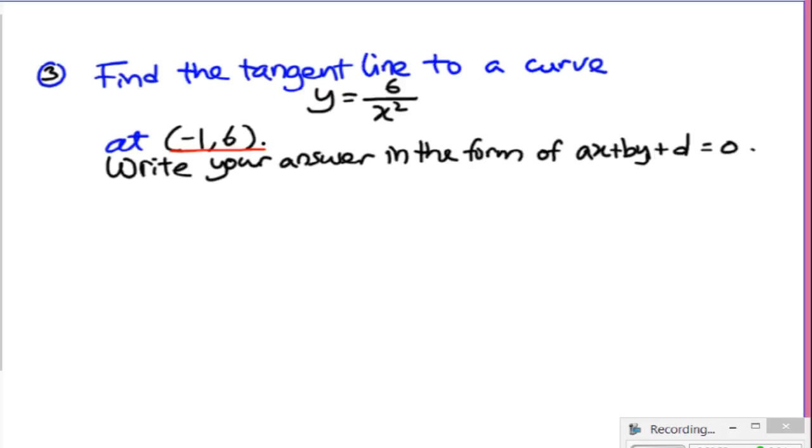Our procedure before is to first write out this formula: y minus y0 equal to m times x minus x0. Now let's check if we have the information for y0 and x0. This has been given. x0 in this case is negative 1, y0 in this case is 6.